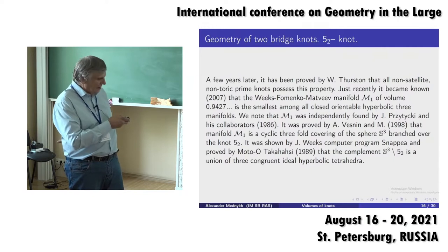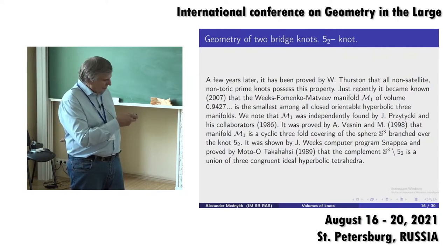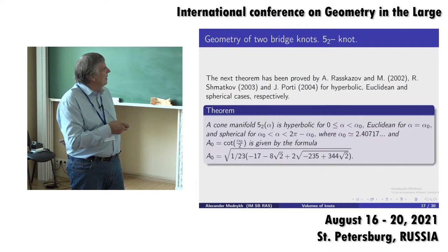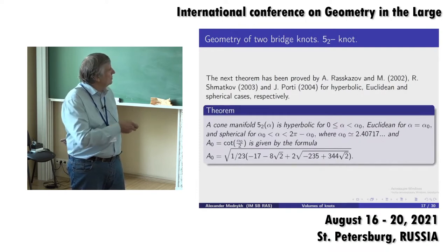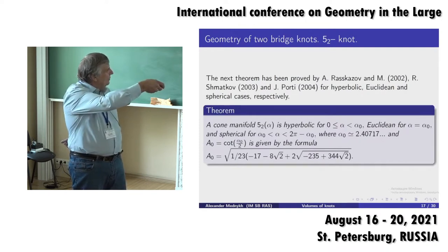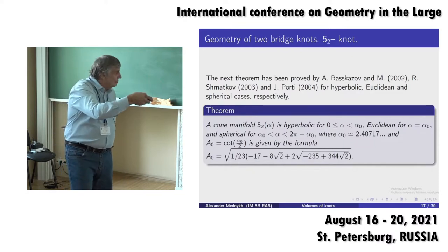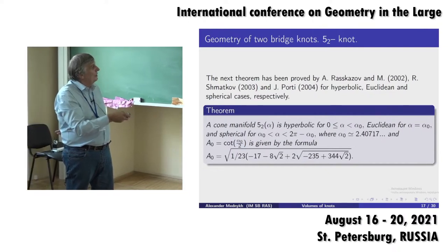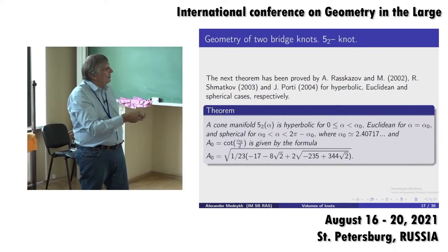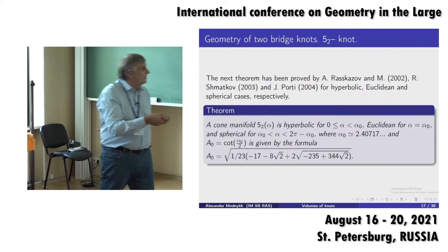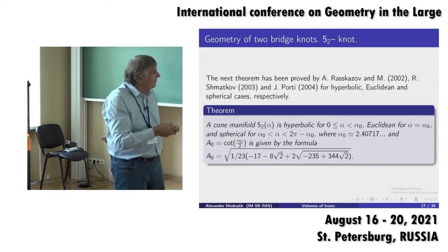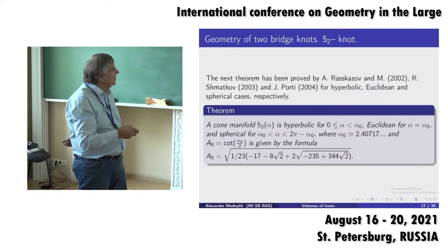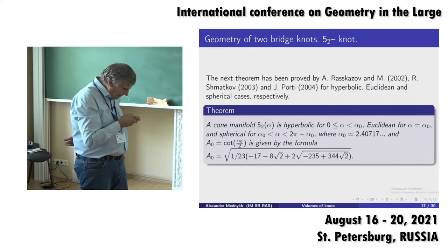The fundamental set of this cone manifold was exactly a regular tetrahedron sitting in hyperbolic space, with dihedral angle exactly 2π/5. Now much more is known about the geometrical structure of the 5₂ knot. One interesting result is that the complement of the 5₂ knot is a union of three congruent ideal hyperbolic tetrahedra — not regular, but isometric to each other. Regarding the existence of geometrical structures: if the angle is small, within certain explicit limits, we have a hyperbolic structure; at one particular point the structure is Euclidean; and for larger angles we have a spherical structure.